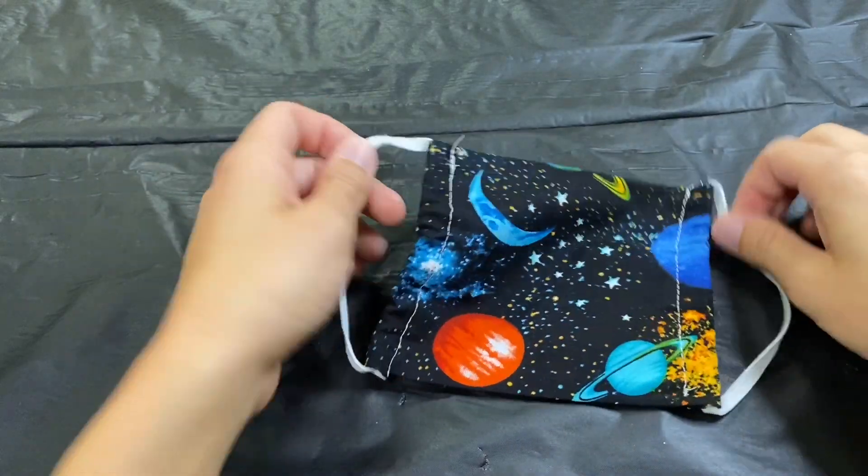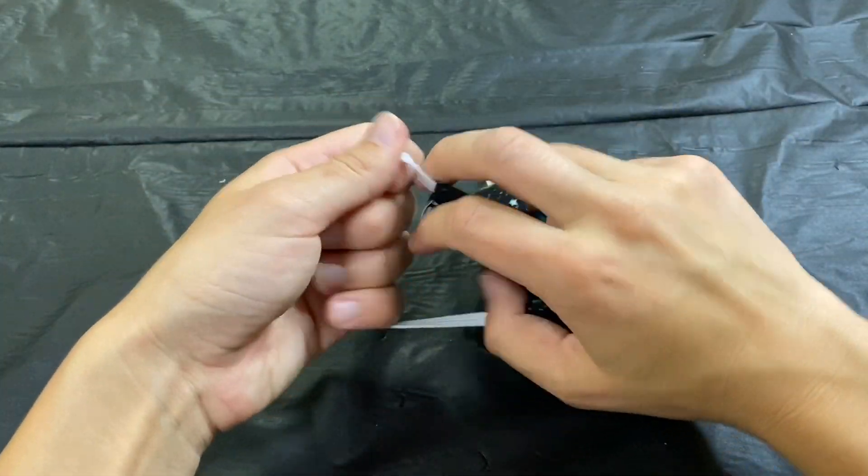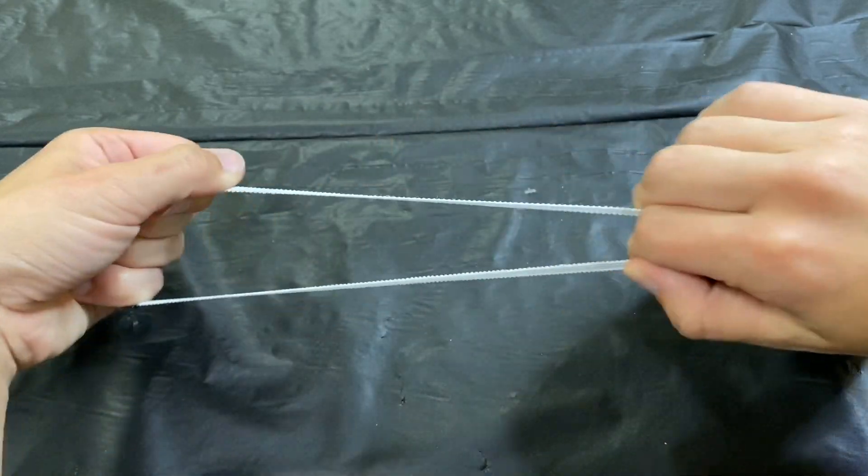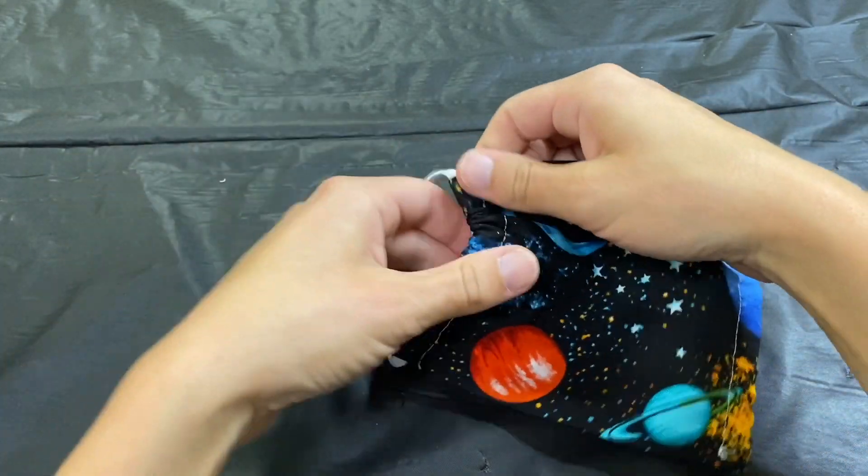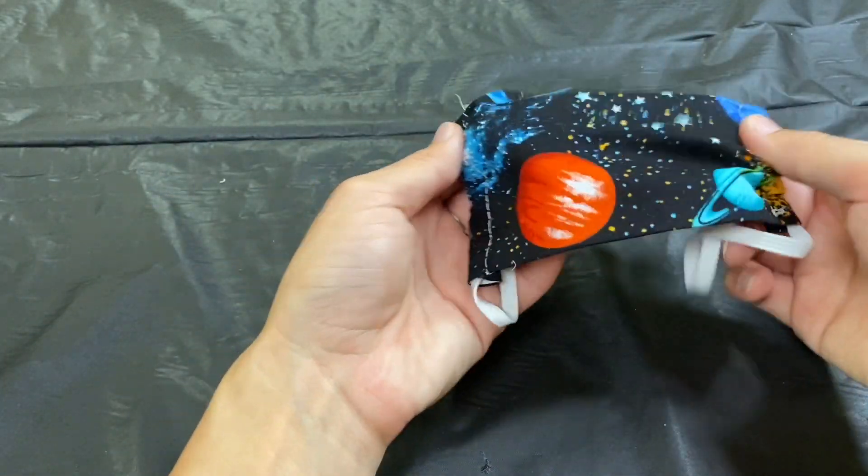So one last thing you want to do before you give the mask to your kid is to make sure that you pull on these ends here and so that'll make it scrunch up here so it'll more easily fit around their face. And that's it for your sewing machine method onto the other methods.